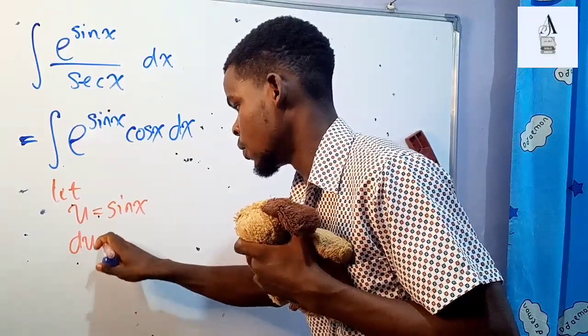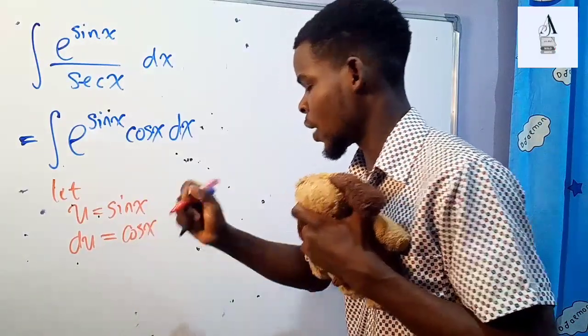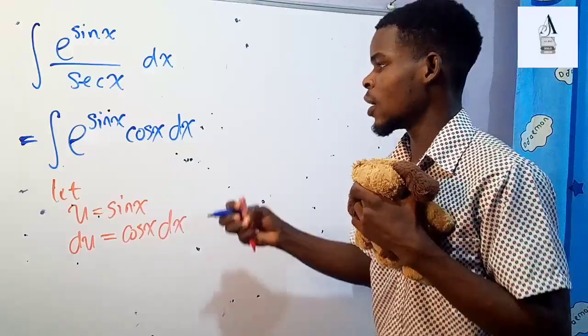that means that du will be cosine of x. So that is the derivative of u with respect to x. So I can put the dx over here.